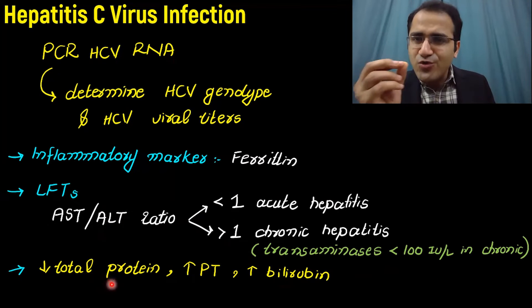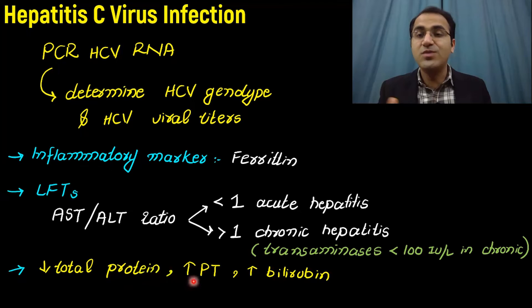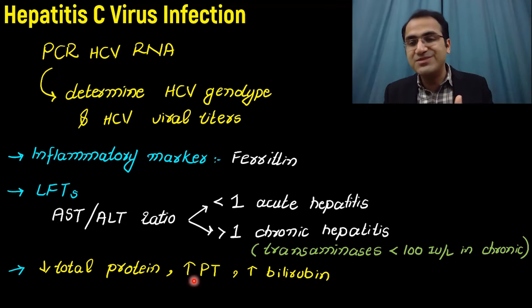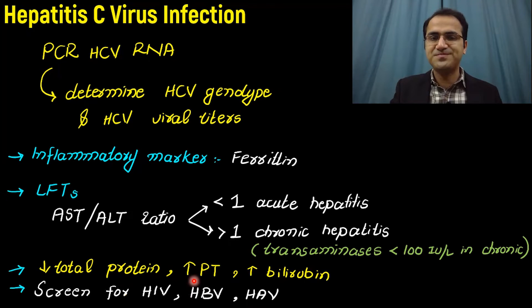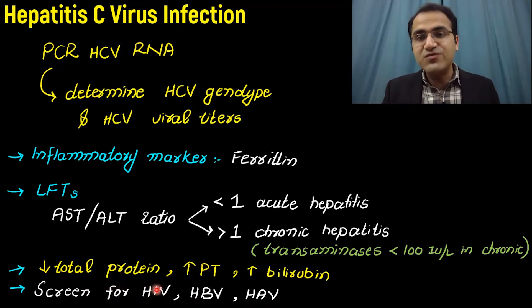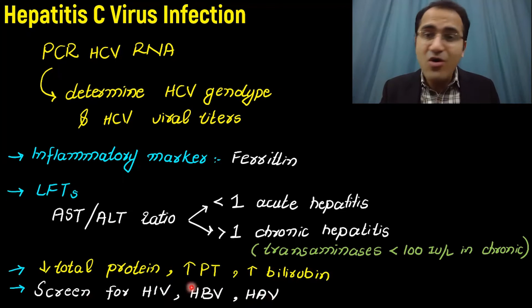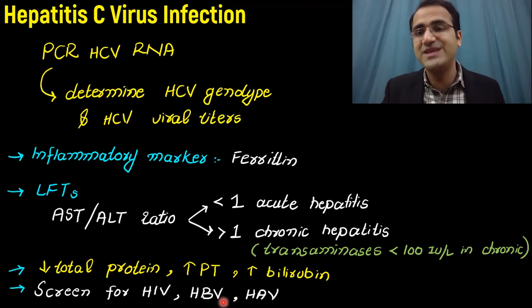To test synthetic liver function, check total protein, which will be low because the damaged liver cannot produce protein. PT will be elevated because clotting factors are produced by the liver. Bilirubin will be elevated with mixed hyperbilirubinemia. You should also screen the patient for HIV, hepatitis D, and hepatitis A, as co-infection with these viruses is possible.